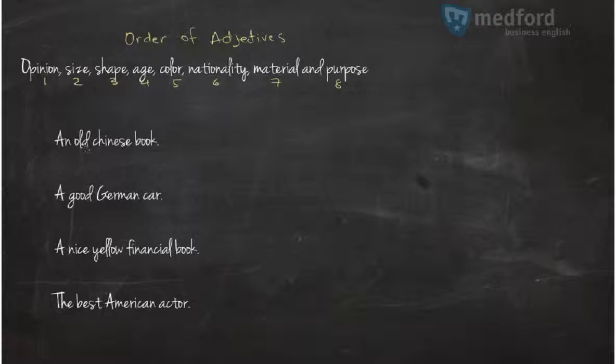Why do I say an old Chinese book and not a Chinese old book? Because old is the age, number 4. And Chinese is the nationality, number 6. I cannot put 6 in front of 4. I have to put it in this order.